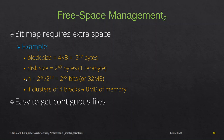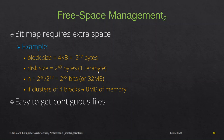Dividing disk size by block size gives us 2 raised to 28 blocks. We need one bit per block, so the bitmap requires 2 raised to 28 bits, which is 32 megabytes. If we use clusters of 4 blocks, we divide that 32 MB by 4 to get 8 MB of memory. So the downside is needing 8 megabytes just to store the bitmap for a 1 TB hard disk, even after using clusters of four blocks.